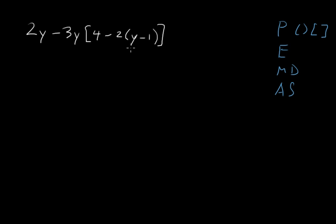So we work with this first: y minus 1. We can't simplify that anymore, so we're done simplifying inside these parentheses. Now we go to multiplication.